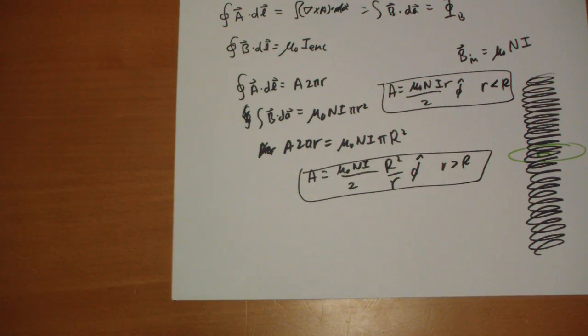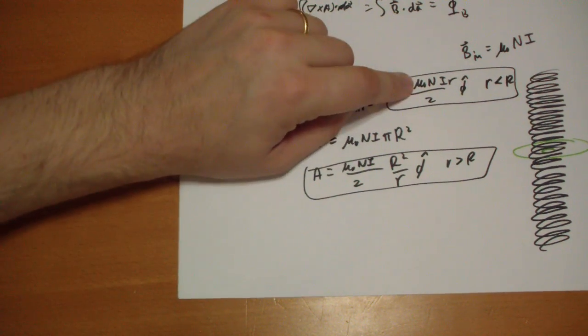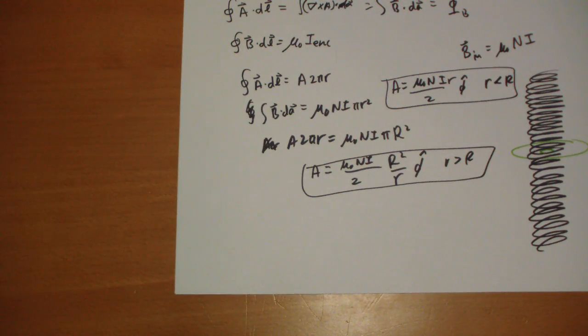And if you don't think that's right, then we can do our two little checks. Is the divergence of A zero? By inspection, yes, there's no phi dependence here. By inspection, yes, there's no phi dependence there. Okay. Is the curl of A? Does that equal B? So the curl of A.